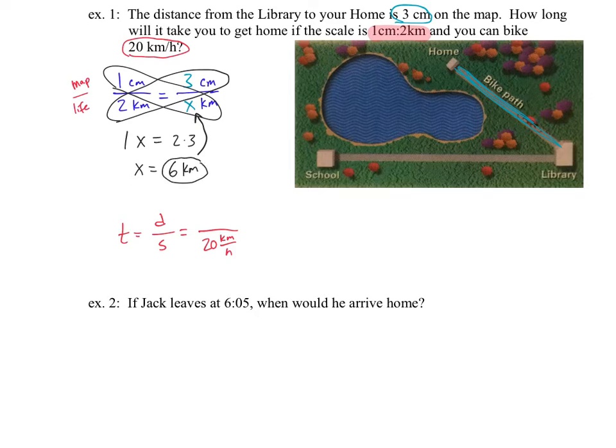So my distance in real life is going to be 6 kilometers, about 3 and a half miles away. If that's the distance, I could take that 6 kilometers and put it in right here. How long is it going to take me? What's the time when my distance is 6 kilometers and I can go 20 kilometers per hour on my bike? Punch that into a calculator and we come up with 0.3.